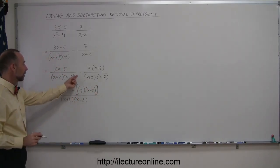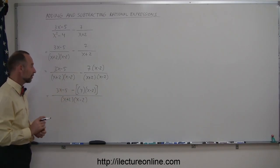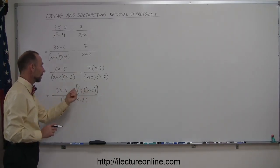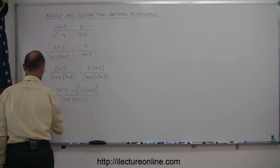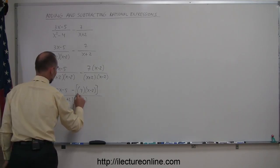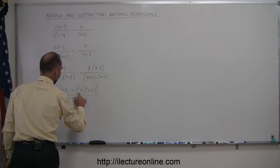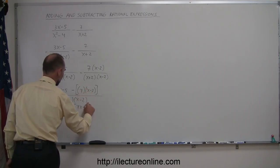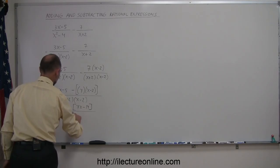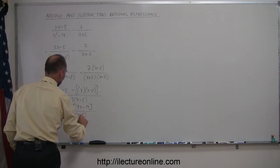I like to use brackets like that because I don't want to make a mistake using this negative sign here. I'm first going to multiply out what's inside the brackets, so this is equal to 3x-5 minus, 7 times x is 7x, 7 times the -2 is the -14, all divided by (x+2)(x-2).